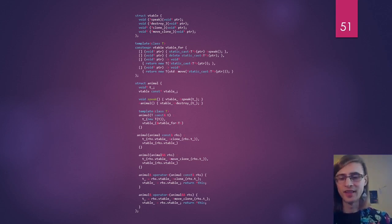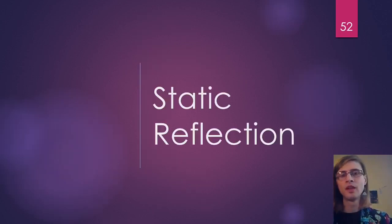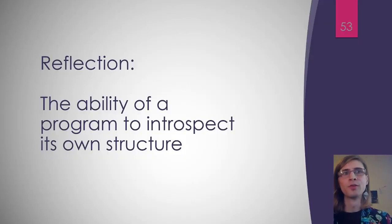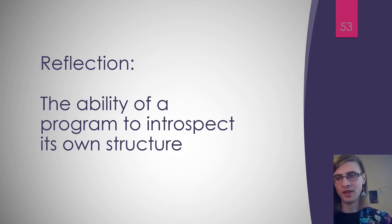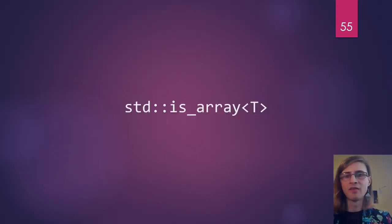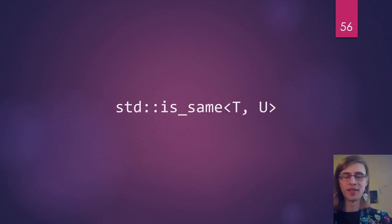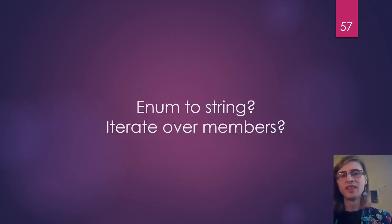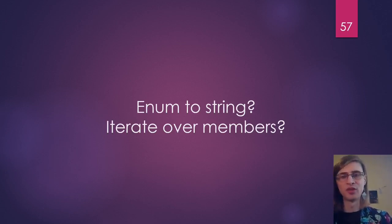The first thing we need is static reflection. Reflection is the ability of a program to introspect its own structure — a program being able to ask questions about itself and use that information to carry out some action. Static reflection is the ability to do that at compile time. We already have some facilities for this in C++, mostly from the type traits header — things like 'is_array', which tells you if a type is an array, and 'is_same', which tells you if two types are the same. But there are things we can't do: we can't take an enumerator and give you its name, and we can't iterate over the members of a type — which is pretty much necessary for what we're trying to do.